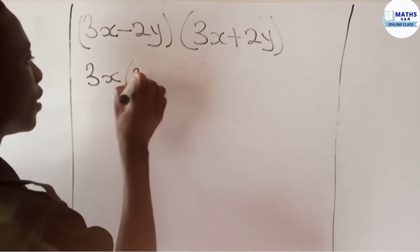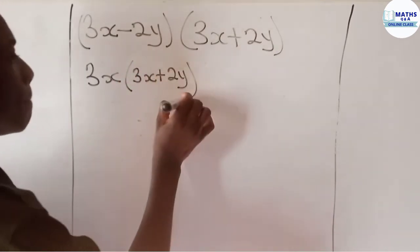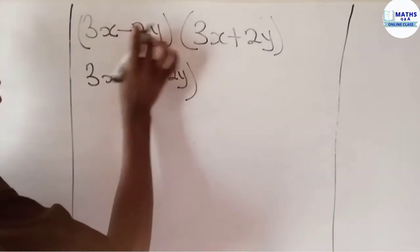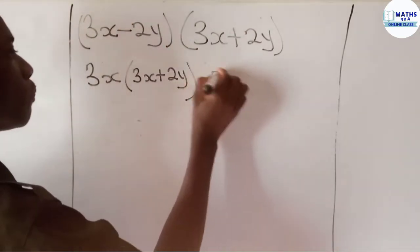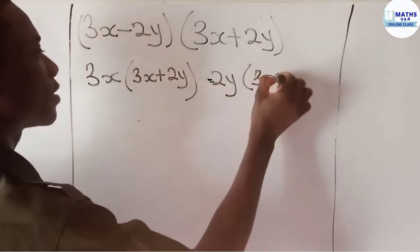Now you come and take this negative 2y too, and you multiply by 3x plus 2y.